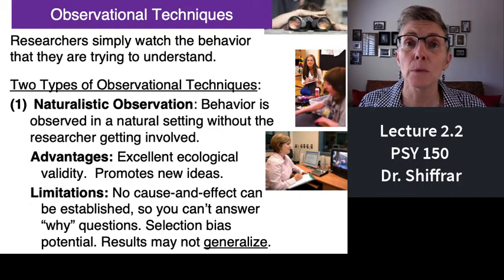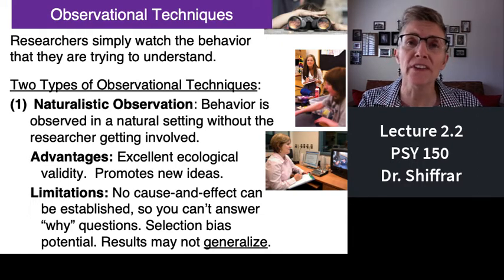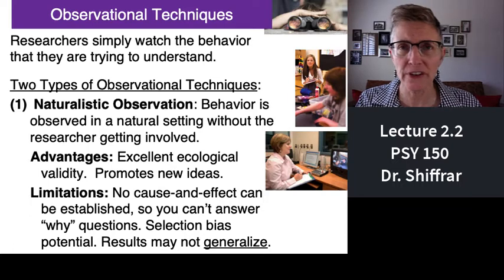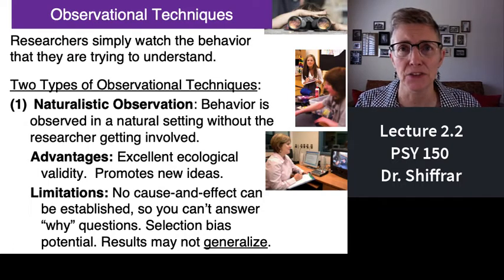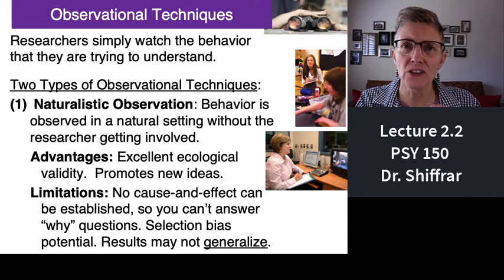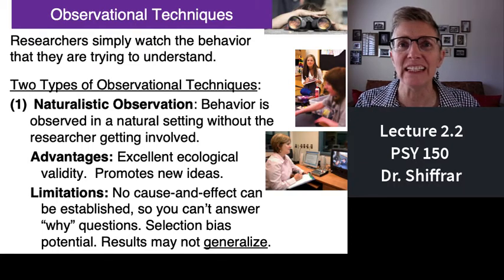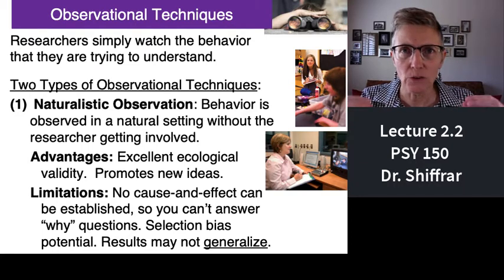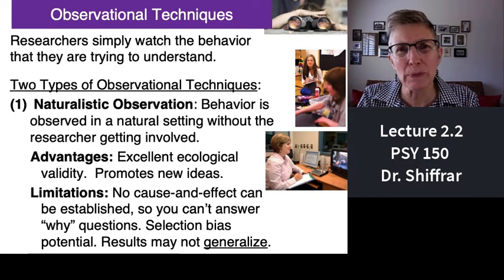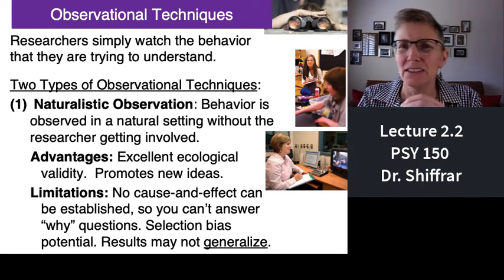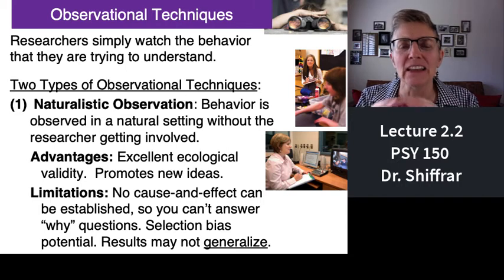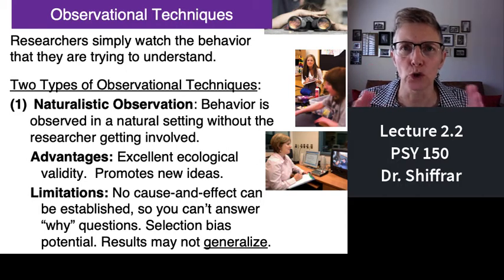Naturalistic observation has drawbacks, but it also has benefits. One advantage is that it's a great way to generate ideas. Another advantage is ecological validity — you're studying the real world. When we move people into labs, they start to behave differently. In naturalistic observation, you're looking at real-world behaviors.